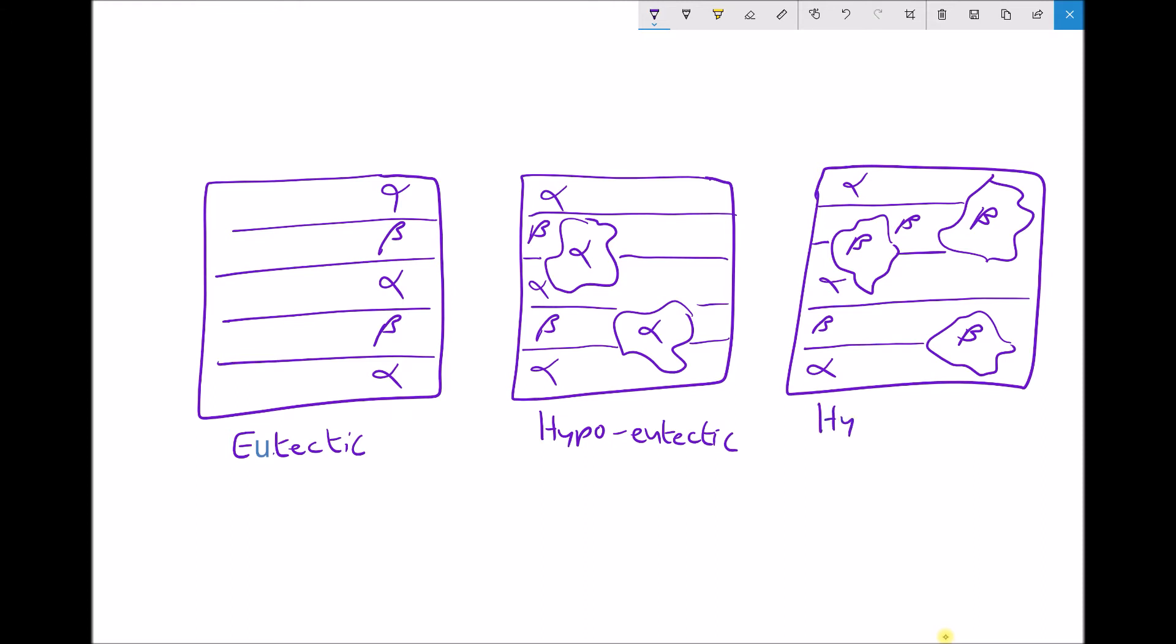And finally, we saw hyper-eutectic. And in the hyper-eutectic, where the composition of tin was higher than the eutectic composition, beta solidified out before the laminar structure formed.